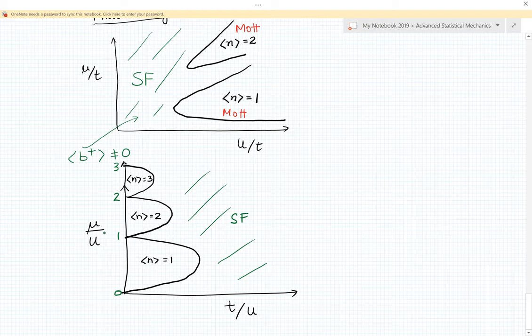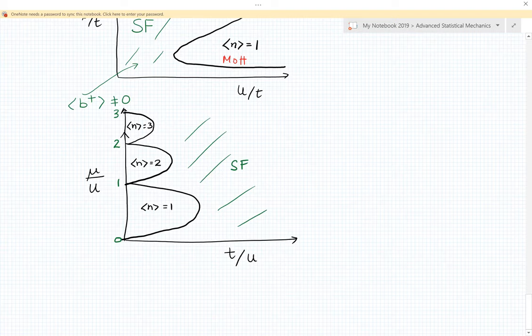This same phase diagram can be shown in another way by plotting mu over U, so using U as the unit of energy, and t over U. Starting with the localized limit where hopping is zero, at that point what you have are just these Mott phases with different densities one, two, three, separated from these superfluid phases that you get as the tunneling between the bosons is enhanced.